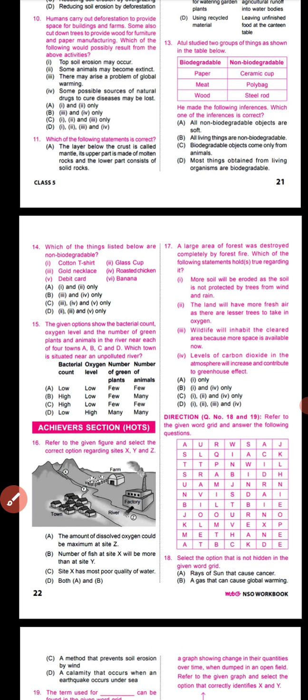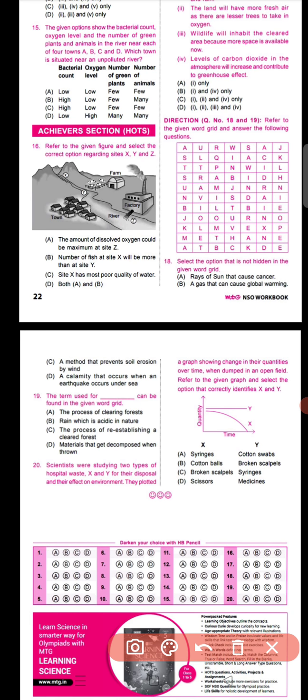Questions eighteen and nineteen refer to a given word grid. Question eighteen asks to select the option not hidden in the word grid — students should do this by themselves. Question nineteen asks for the term used for rain that is acidic in nature; the answer is acid rain, which can be found in the word grid. Students should find and verify it themselves.